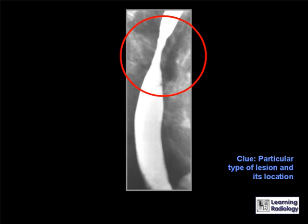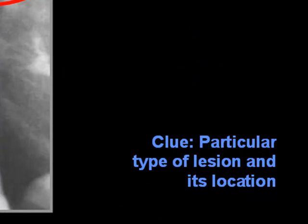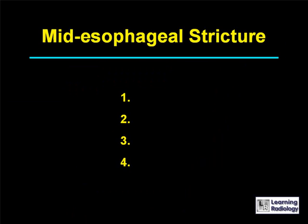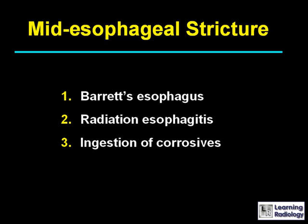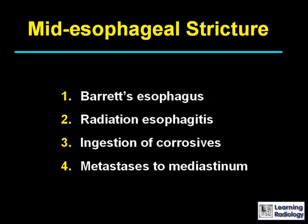The next differential diagnosis is for a mid-esophageal stricture. There are four causes: Barrett's esophagus, radiation esophagitis, ingestion of corrosives, or metastases to the mediastinum.